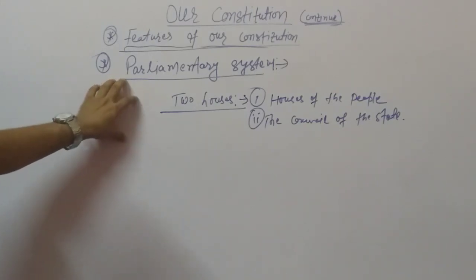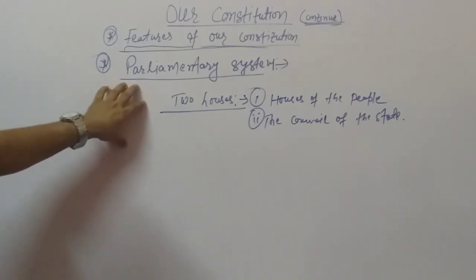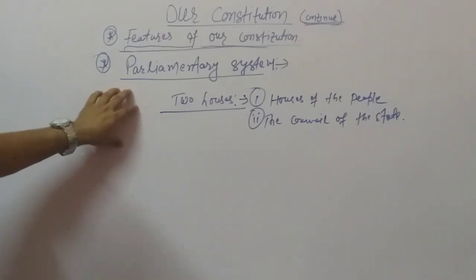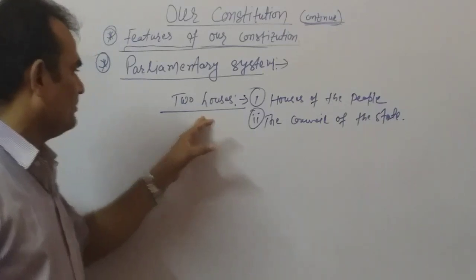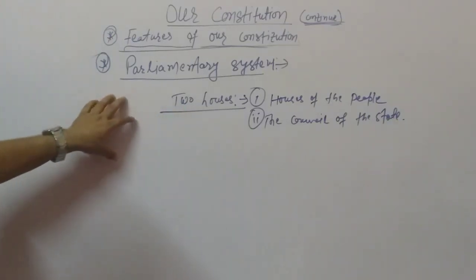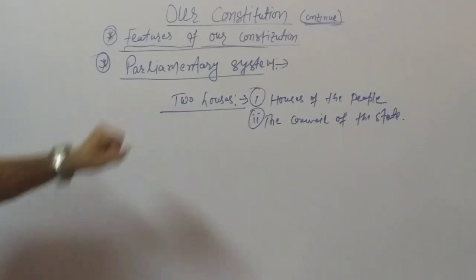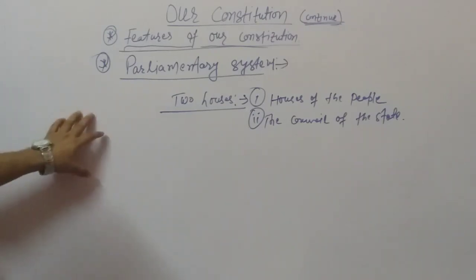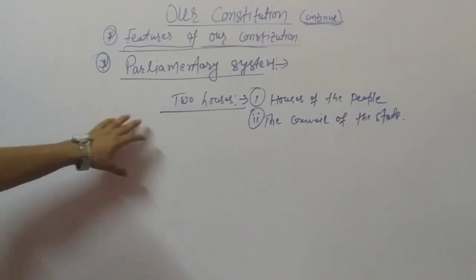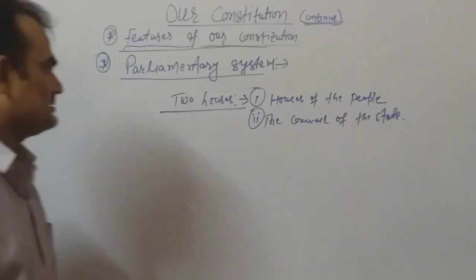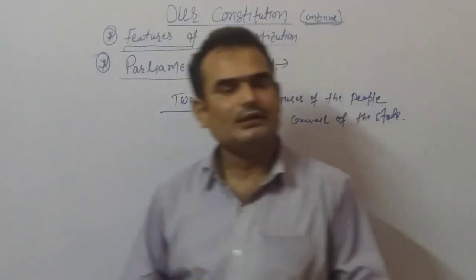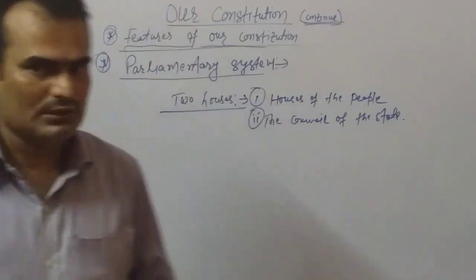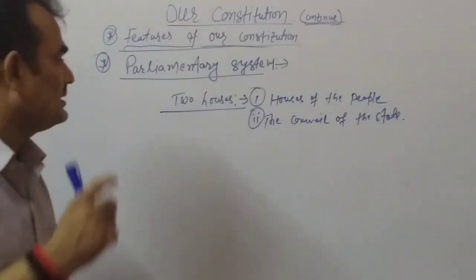The government at the center is answerable to the parliament. The government at the state level is answerable to the state legislature. Everything flows through this accountability structure.